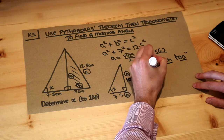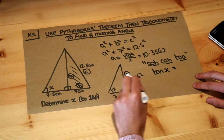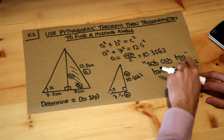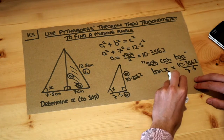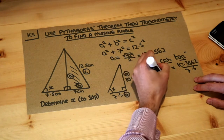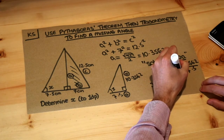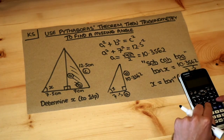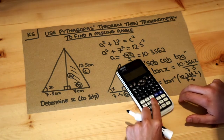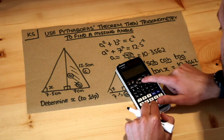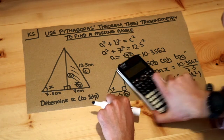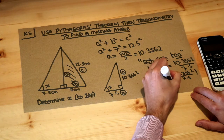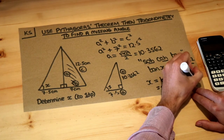So tan of x equals the opposite, 10.3562, over the adjacent, 7.5. To solve for x, we take the inverse tan of both sides: x equals inverse tan of 10.3562 over 7.5. Putting that into the calculator using shift-tan for inverse tan and the fraction button gives an angle of 54.1 degrees to one decimal place, and that is the final answer.